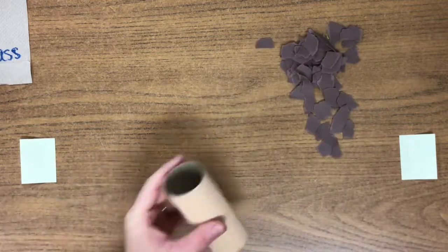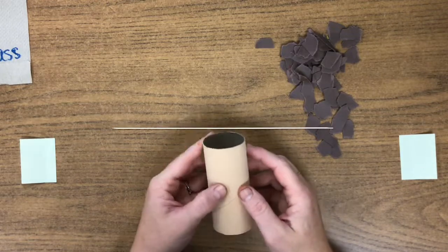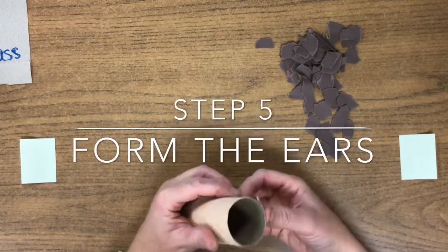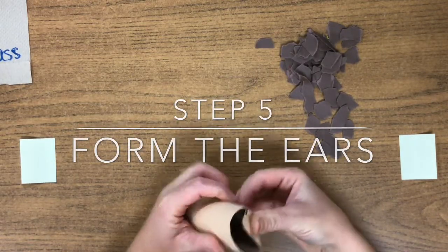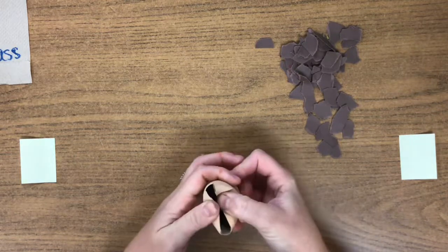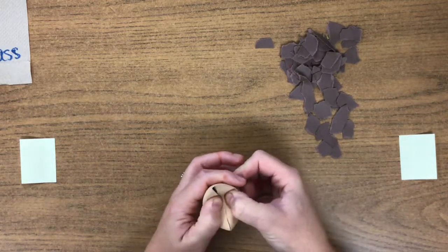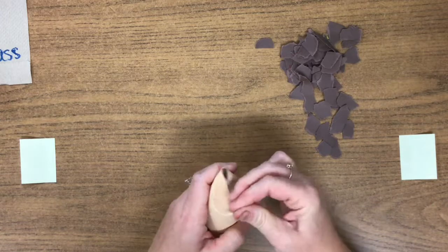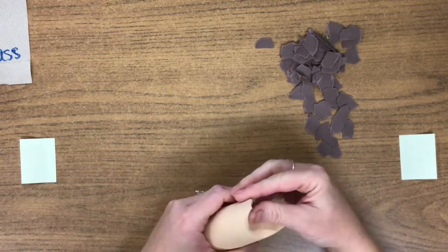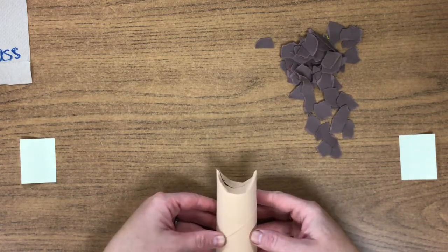We're going to go back to that dry paper towel roll. And before we can add any of the brown paper, we need to take our fingers, push in on one side and push in on the other side. And if you just keep pinching with your fingers, now you have some nice pointy owl ears.